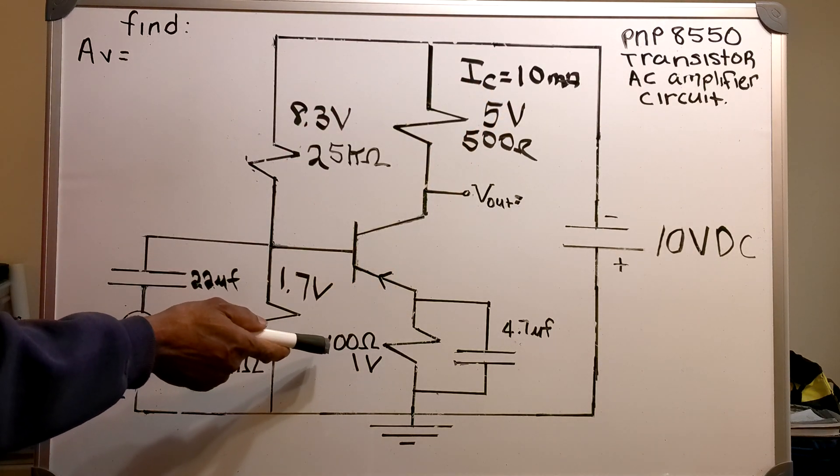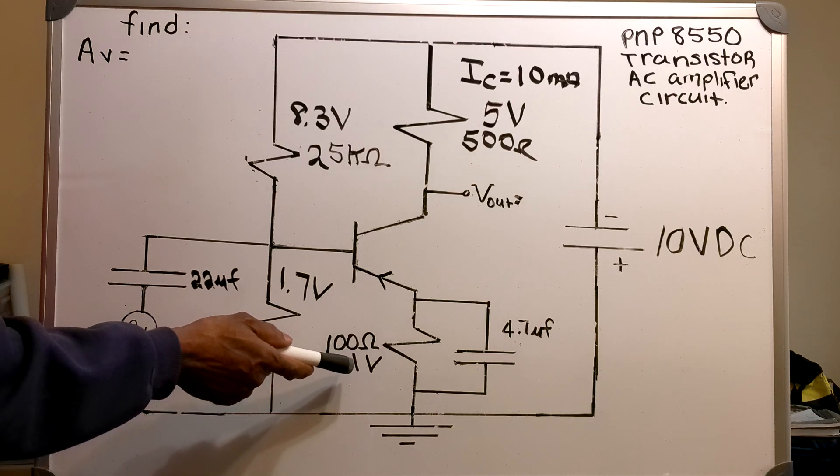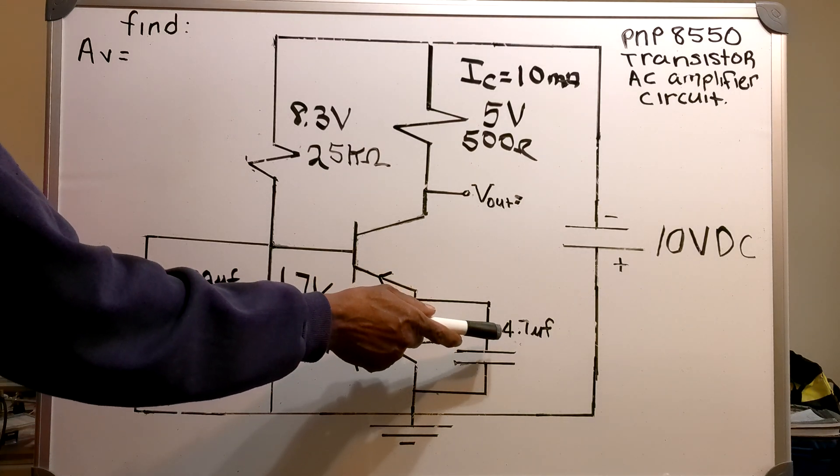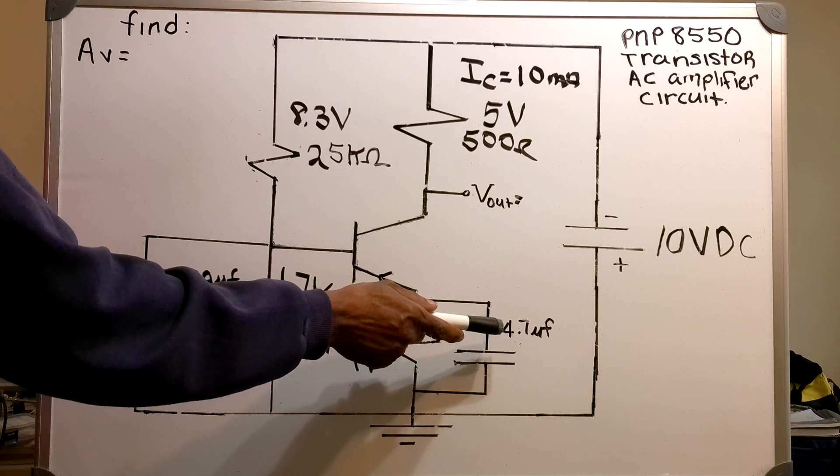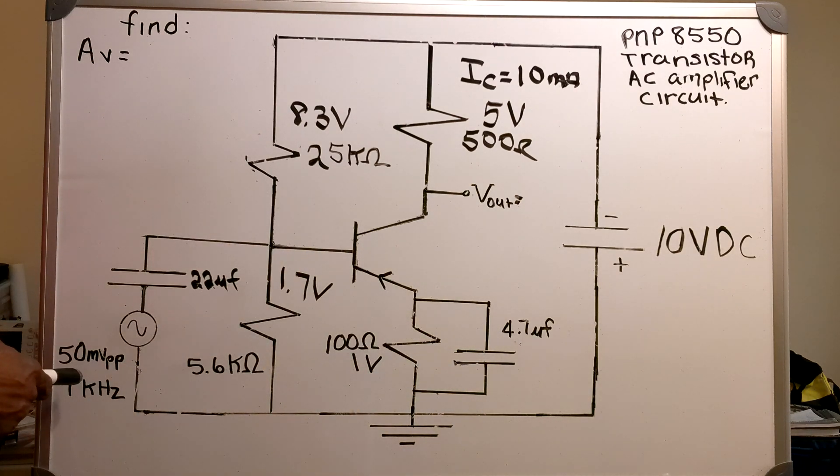And on the emission side, I've got a 100 ohm resistor, I have 1 volt, in parallel with a 4.7 microfarad capacitor. And on the input, I've got a 50 millivolt peak-to-peak 1 kHz sinusoidal.